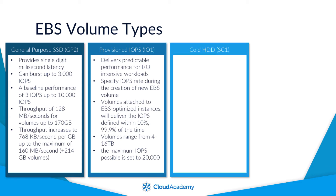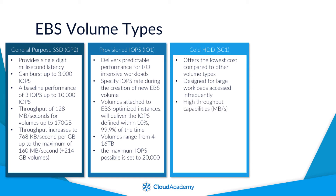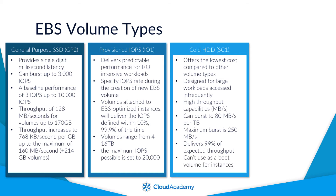Cold HDD volumes offer the lowest cost compared to all other EBS volume types. They are suited for workloads that are large in size and accessed infrequently. Their key performance attribute is throughput capability in megabytes per second. They have the ability to burst up to 80 megabits per second per terabyte, with a maximum burst capacity for each volume set at 250 megabytes per second. They will deliver the expected throughput 99% of the time over a given year, and it's not possible to use these as boot volumes for your EC2 instances.